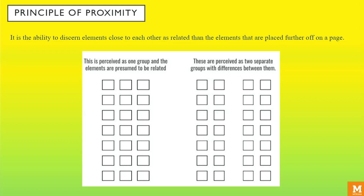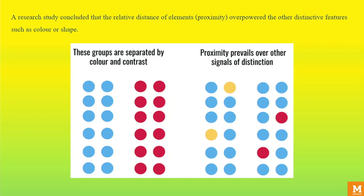Moving further towards the principle of proximity. It is a cognitive tendency to perceive elements close to each other as related, more so than elements that are placed farther away. This is caused by the subconscious urge to organize the information one is exposed to and group them automatically. For example, in the image given below, the first set of elements are perceived as one group and presumed to be related. In the second set, the elements are perceived as two separate groups. In a research study conducted, the relative distance of elements — that is, the proximity — overpowered distinctive features such as color. Even though the color of the elements are different, they are still perceived as a group because of proximity.